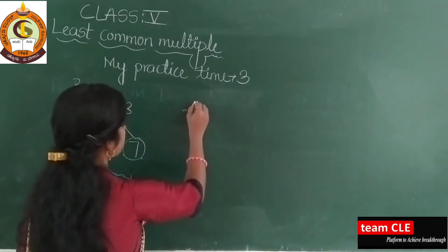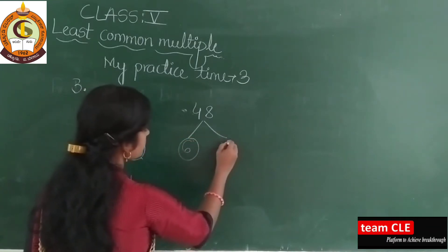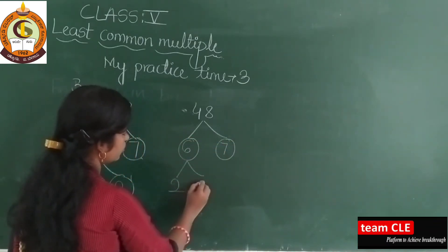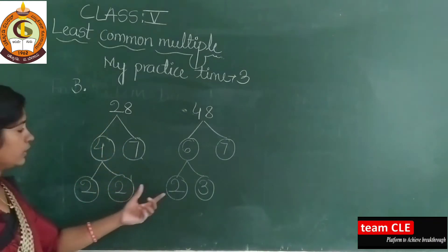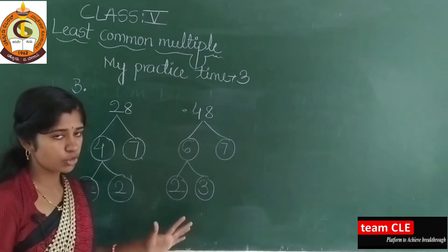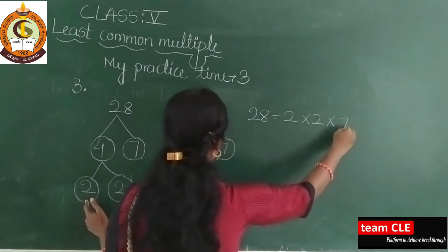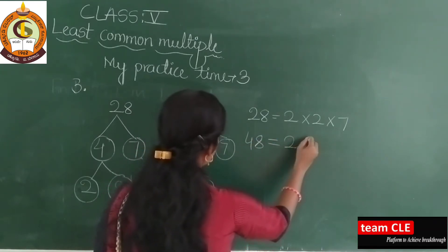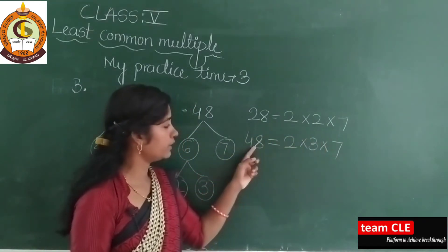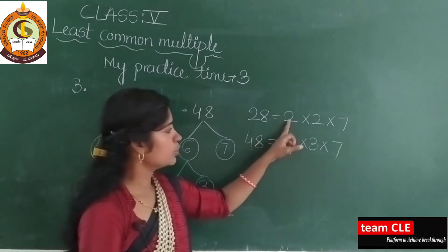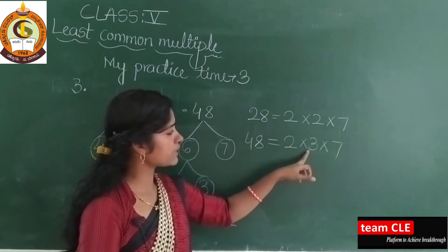Next take 48. 48 is in which table? 6 eights are 48. Again take 6: 2 threes are 6. So the factor tree for 48 gives prime factors 2, 3, 8 — then 4 sevens are 28, 2 twos are 4. Stop when you get prime numbers. Now write the prime factors: 28 = 2 × 2 × 7. Next take 48 and write 2 × 3 × 8 — then verify: 2 twos are 4, 4 sevens are 28; 2 threes are 6, 6 eights are 48.